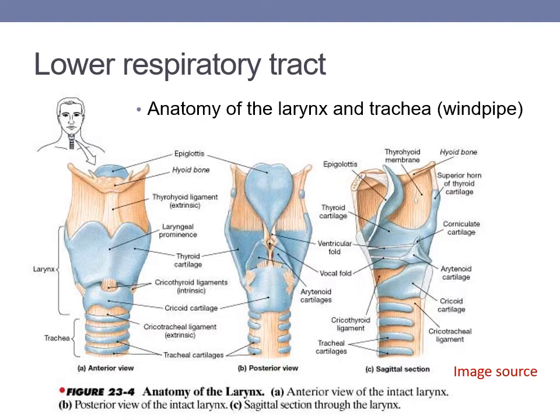Air moves from the larynx to the trachea, also known as the windpipe. The trachea is made of 16 to 20 rings of cartilage held together by connective tissues. The cartilage prevents the trachea from collapsing during inhalation and exhalation. The rings of cartilage are C-shaped with the opening in the back. The esophagus sits just behind the trachea, and the opening in the back of the trachea cartilage allows the esophagus to expand as food passes through it.